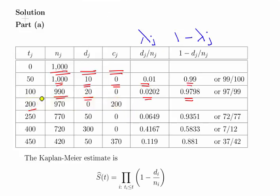Between 200 and 250 hours we lost 200 bulbs due to the earth tremor. They don't fail — they're just removed. So when we start the period from 250 to 400 hours, we've lost those 200 bulbs from the previous period, leaving us starting at 770. 50 of them break and we don't lose any more. The event probability is 0.0649 and the survival probability is estimated at 0.9351.